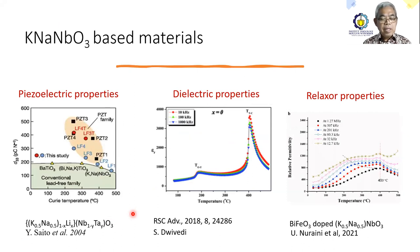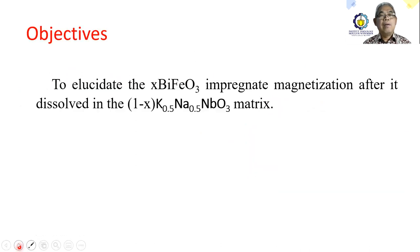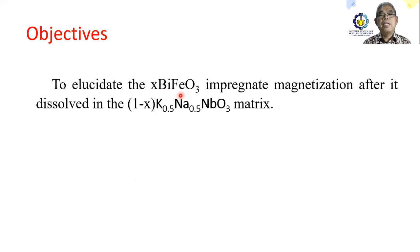Our concern now is on the KNN-based material. The KNN material has attracted great interest because it has multi-properties such as piezoelectric properties, dielectric properties, and relaxor properties. Our objective in this work is to elucidate the role of iron oxide impregnating magnetism after it dissolves in the KNN matrix.